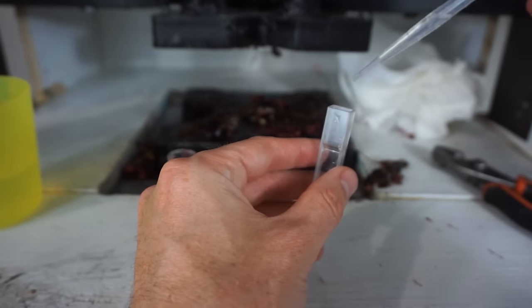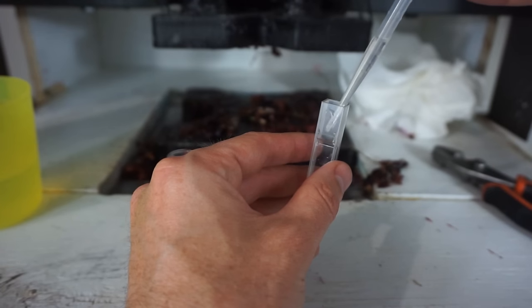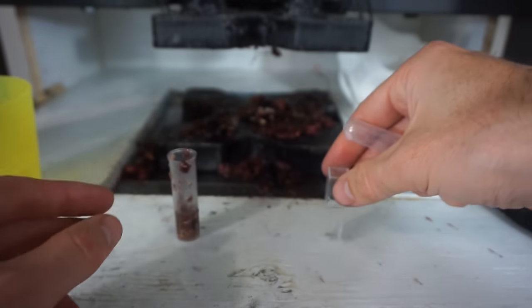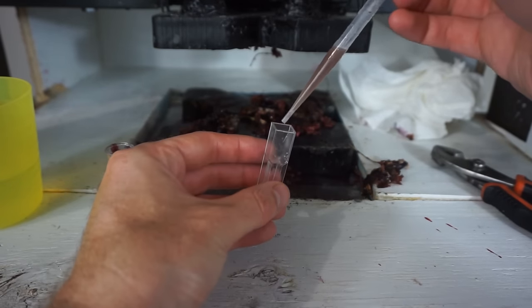I'm going to dilute this by half so we can see it better. Here's one milliliter of water, then one milliliter of the cherry juice.